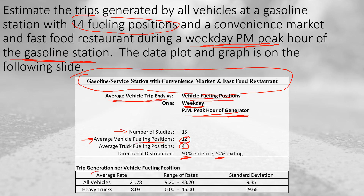We are given the average rates: 21.78 trips per fueling position for all vehicles, and 8.03 trips per truck fueling position for heavy vehicles. The range of rates was between 9.2 and 43.2, and the standard deviation of the average rate was 9.35. Since 1.1 times 9.35 equals 10.285, which is much lower than the 21.78 average rate, we would be good to use the average rate if needed.